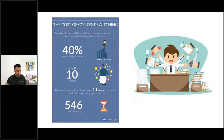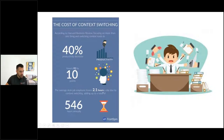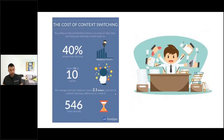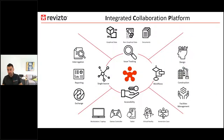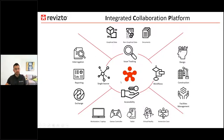People on the project are constantly jumping from one tool or process to another — we call this context switching. A Harvard review talks about how inefficient this process is across all industries. The average desk employee loses two hours a day due to context switching. If Revisto can help you gain half of that back as an integrated collaboration platform, then hopefully we're doing a good job.